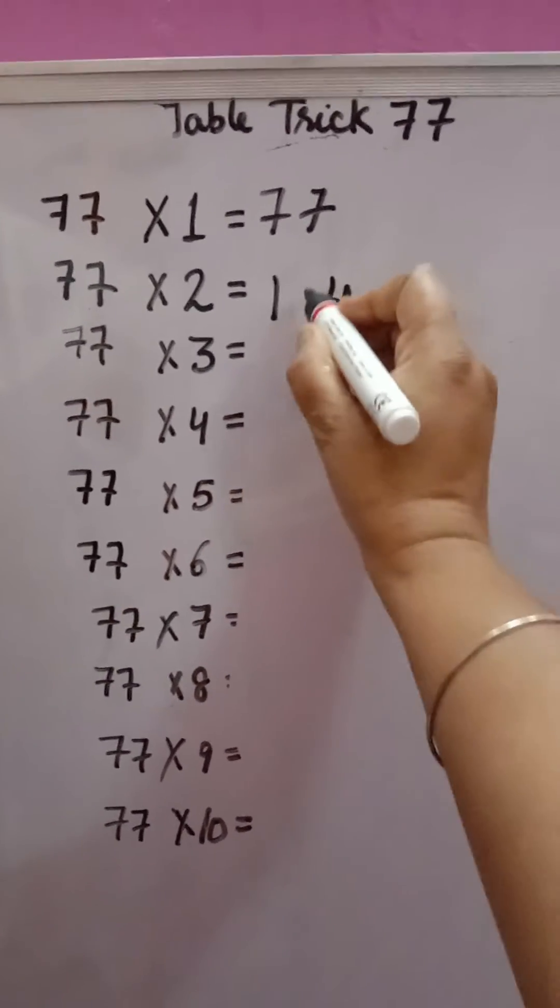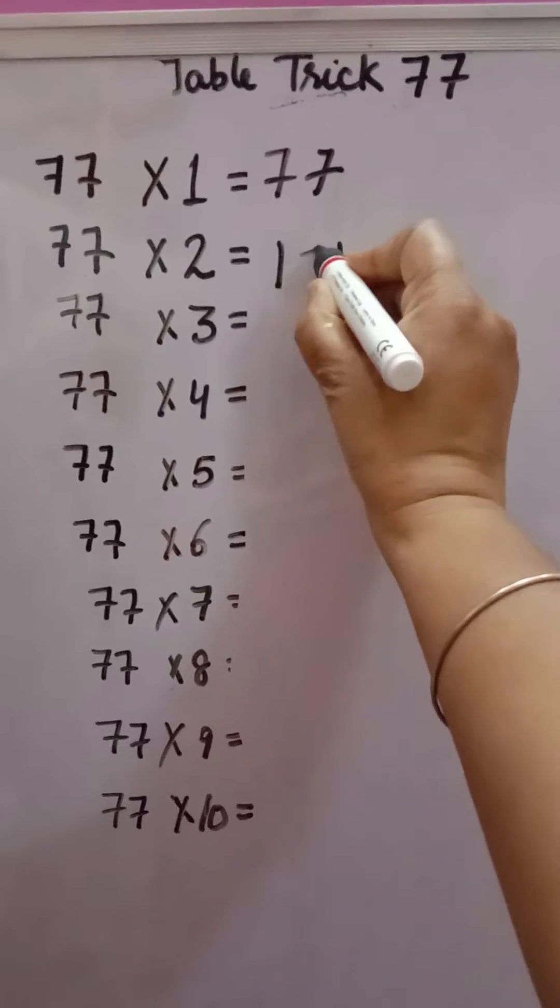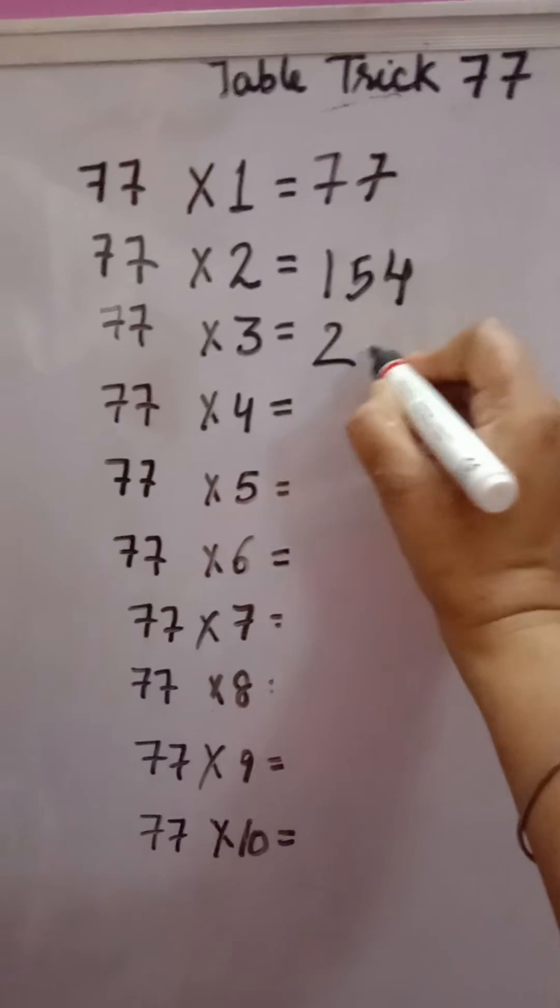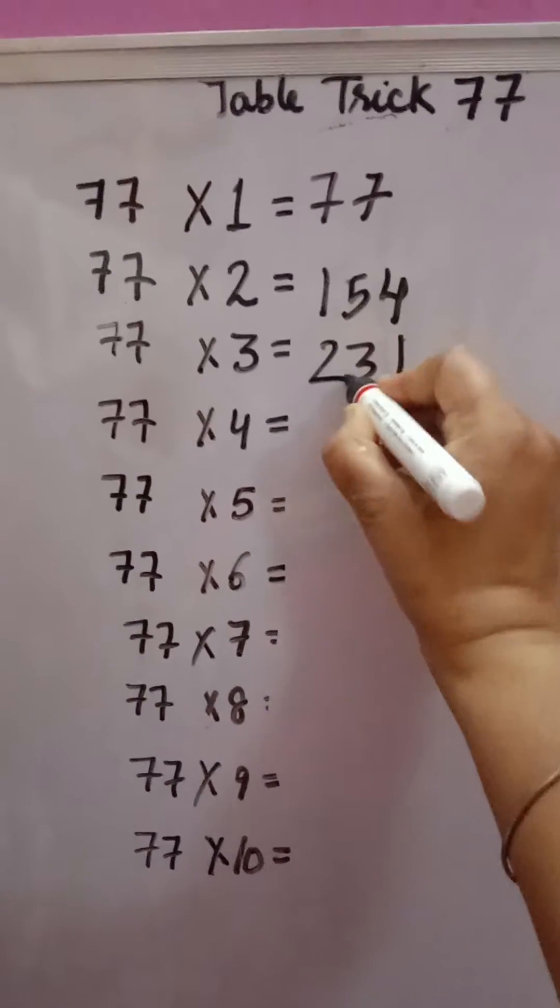In the middle, you have to add. Write 1 plus 4 equals 5, so 154. 77 times 3... 7 times 3 is 21, 2 plus 1 equals 3. Same way.